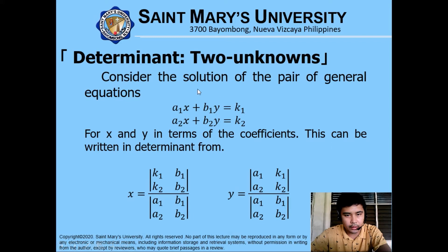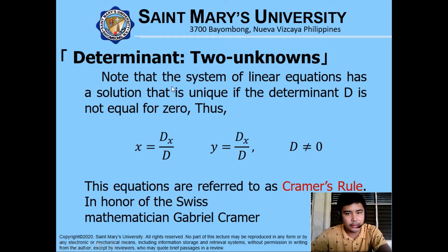All unknowns share the same denominator determinant, which consists of the coefficients of x and y: a sub 1, b sub 1, a sub 2, and b sub 2. Note that the system of linear equations has a unique solution only if the determinant D is not equal to zero. If D equals zero, you may need to use substitution or elimination methods instead.